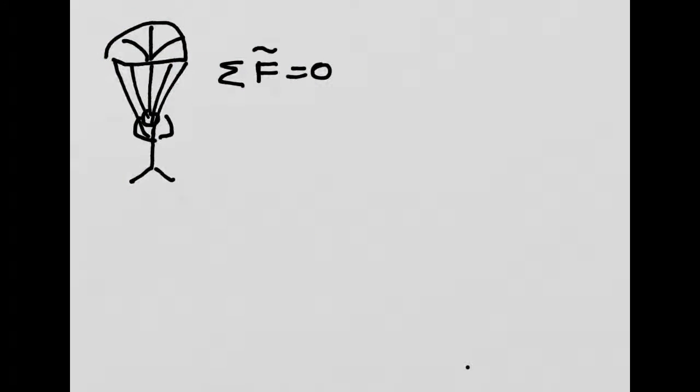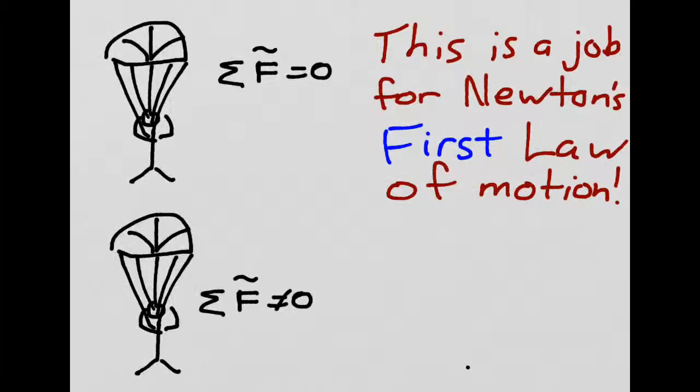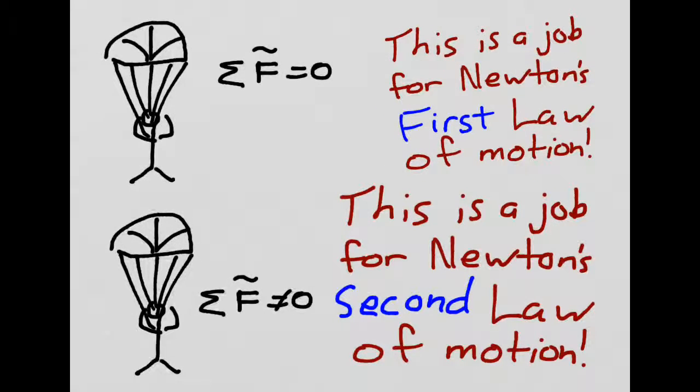Let's consider a parachutist falling down. If the sum of the forces is equal to zero, then this is a job for Newton's first law of motion. If, however, the sum of the forces is not equal to zero, then this is a job for Newton's second law of motion.